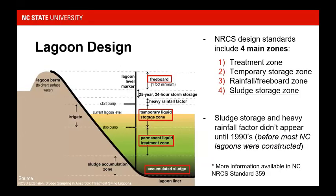The primary manure management system for swine operations in North Carolina are anaerobic lagoons — not just for storage, but also for treatment. Manure is flushed from the barn, and the solids settle and accumulate in the bottom of the lagoon. That's our accumulated sludge.